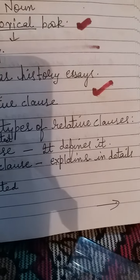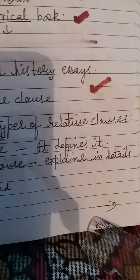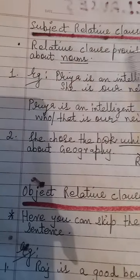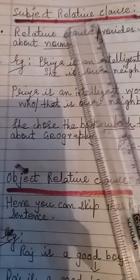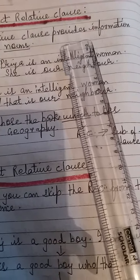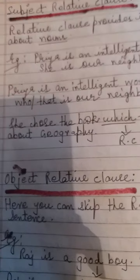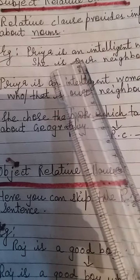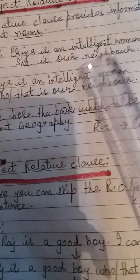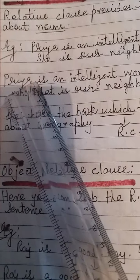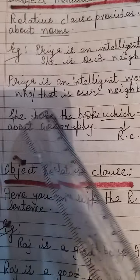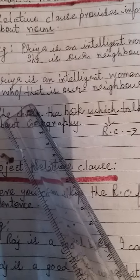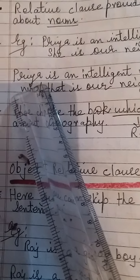The defining clause defines things. The subject relative clause means the defining part. A defining clause provides information about the subject noun. Example: 'Priya is an intelligent woman. She is our neighbor.' These two sentences combine to become: 'Priya is an intelligent woman who — or that — is our neighbor.' We can add either 'who' or 'that,' both are correct. Priya is the subject and noun here.